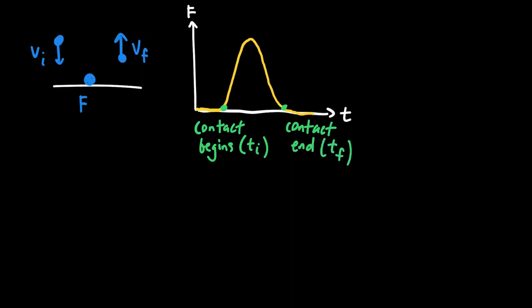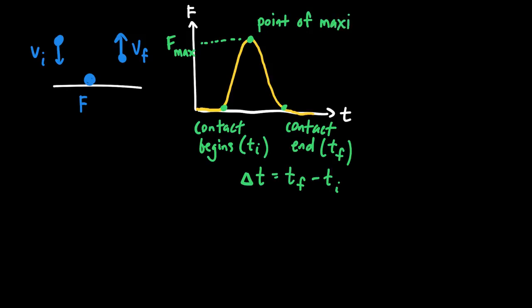This point here would be where contact between the ball and the floor ends, and I'll call that t-final. So when two objects interact and collide, the force exerted on them is not instantaneous — it is exerted over a certain time interval. That time interval delta-T equals t-final minus t-initial. The peak of the graph is called the point of maximum compression.